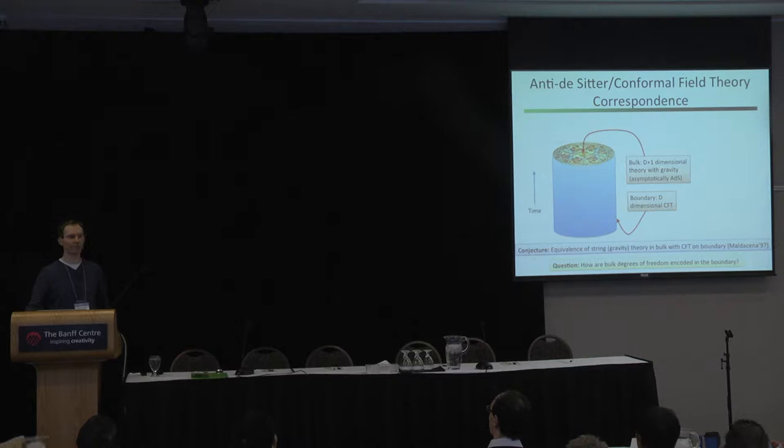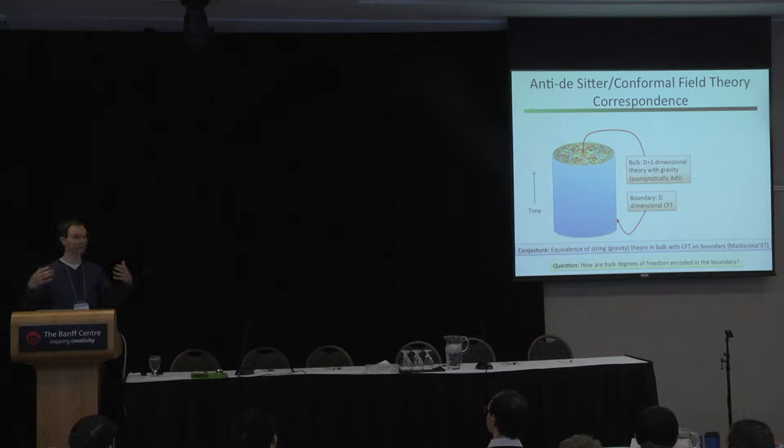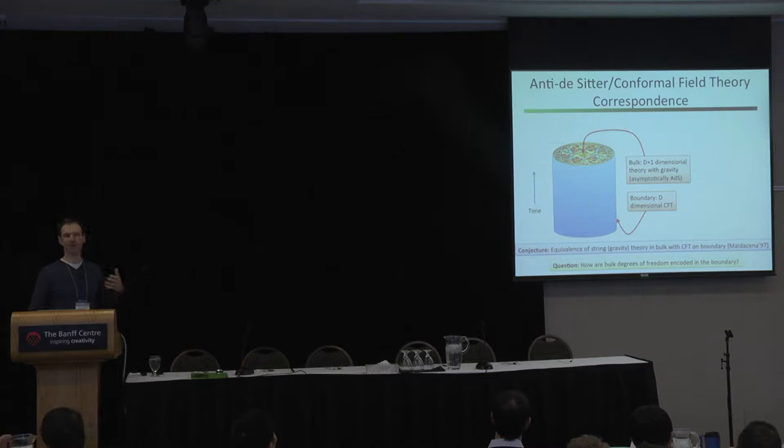What is this correspondence? It is the statement that two theories of physics are supposed to be isomorphic — they should have isomorphic Hilbert spaces, Hamiltonians that map to each other isomorphically, observables that map isomorphically from one to the other, and so on. They're the same thing, but despite being the same thing, on the surface they look extremely different.